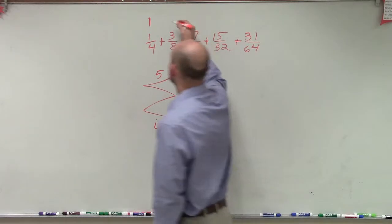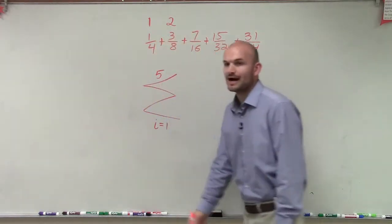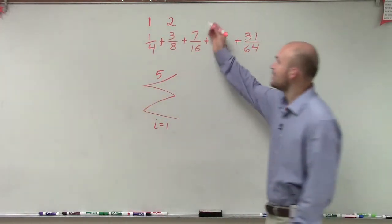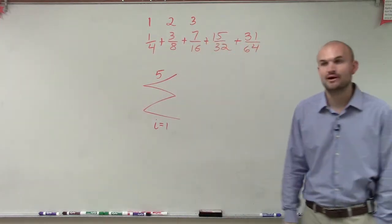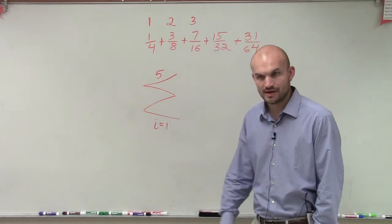When I plug a 2 into my term, how do I get 3 eighths? When I plug a 3 into 7 sixteenths, and when I plug a 3 into our rule, how do I get 7 sixteenths?